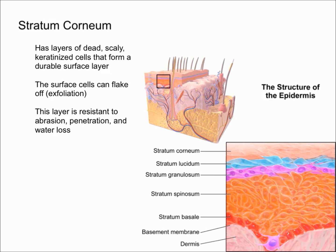Finally, the uppermost layer — the layer that everyone sees — is the stratum corneum. This layer has dead, scaly, keratinized cells that form a durable surface layer, and it can consist of up to 30 layers of cells. This layer is resistant to abrasion, penetration, and water loss, protecting you. These surface cells can flake off, which is also known as exfoliation.